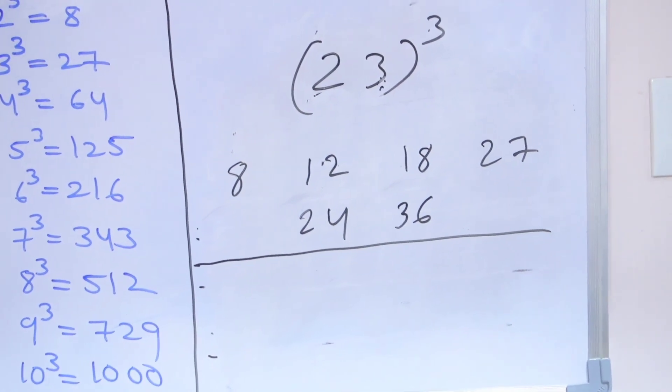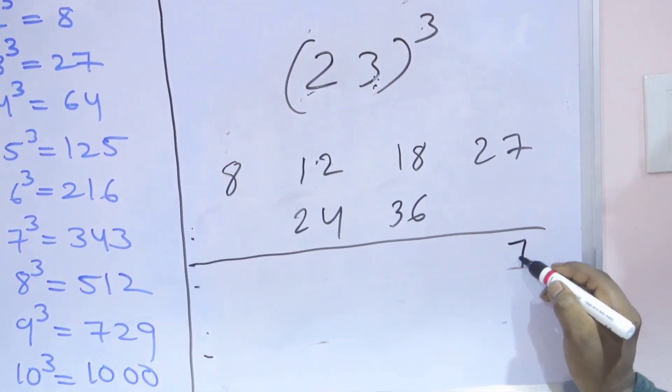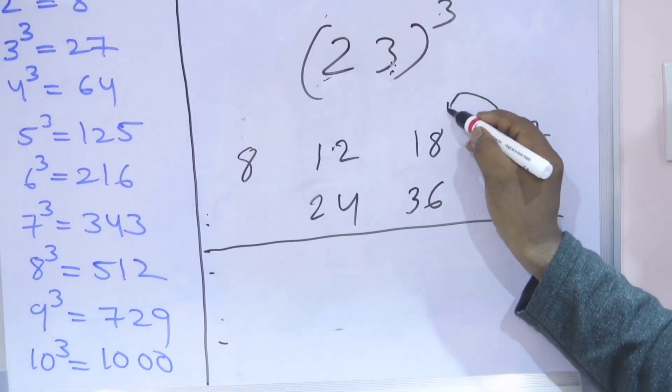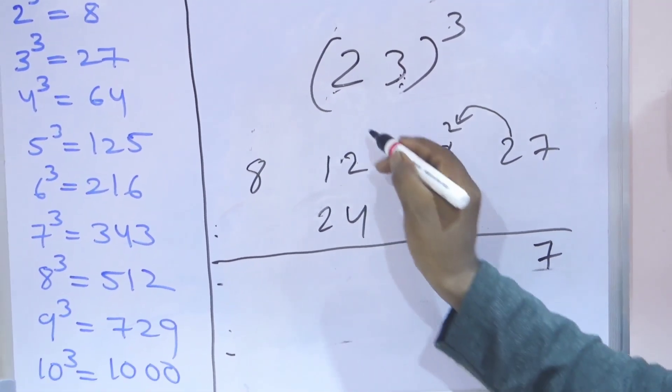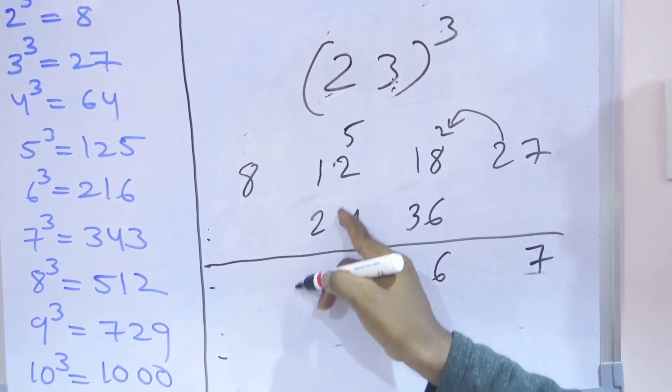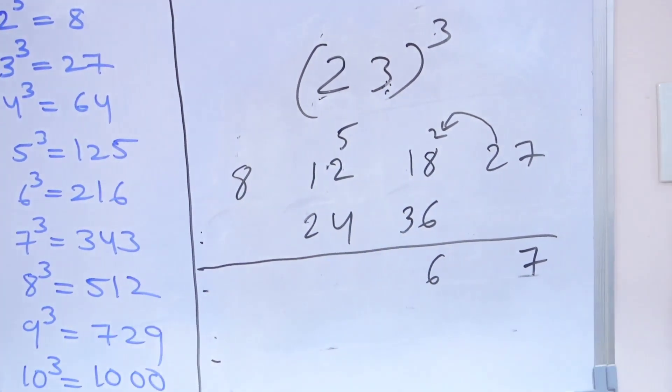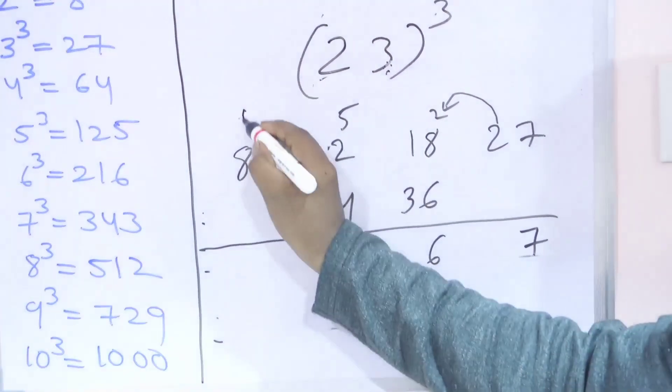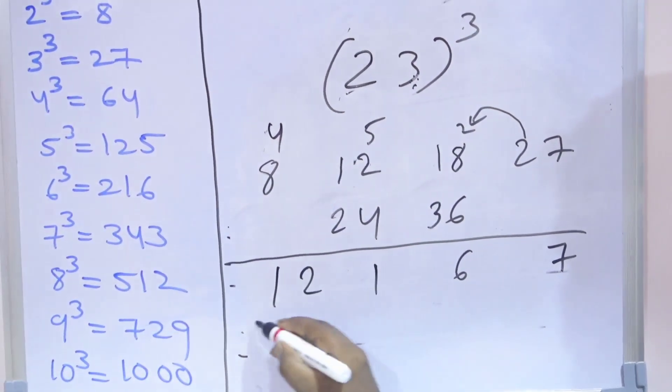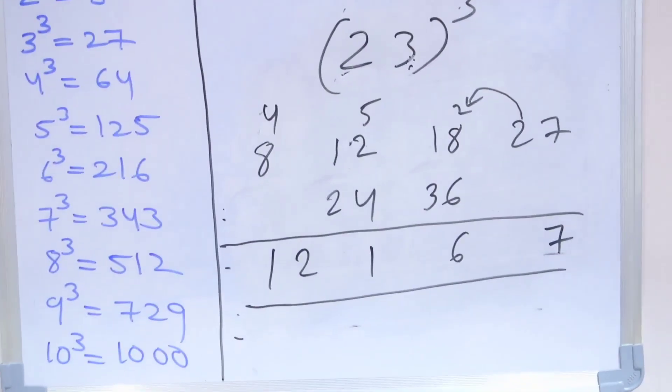Now again, same method, we need to add. First 7. And this 2 here. 18 plus 2 is 20, 20 plus 36 is 56, write 6, carry 5. 24 plus 12 is 36, 36 plus 5 is 41, write 1, carry 4. 8 plus 4 is 12. So 12167 is the cube of 23.